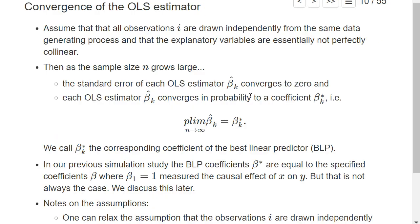That the OLS estimator converges against some fixed value holds typically in many examples. There are formal conditions that can be satisfied, for example, if our observations were drawn independently from the same data generating process.